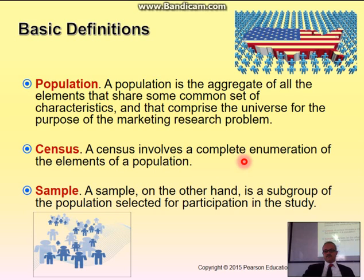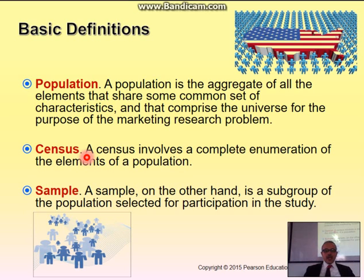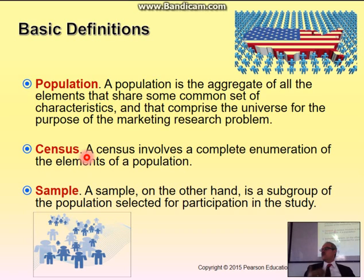The government will form a team whose job is to go and measure the entire population. For the entire population, they will have a list of criteria — characteristics of what they do or don't do. A sample, on the other hand, is a subgroup of the population selected for study.